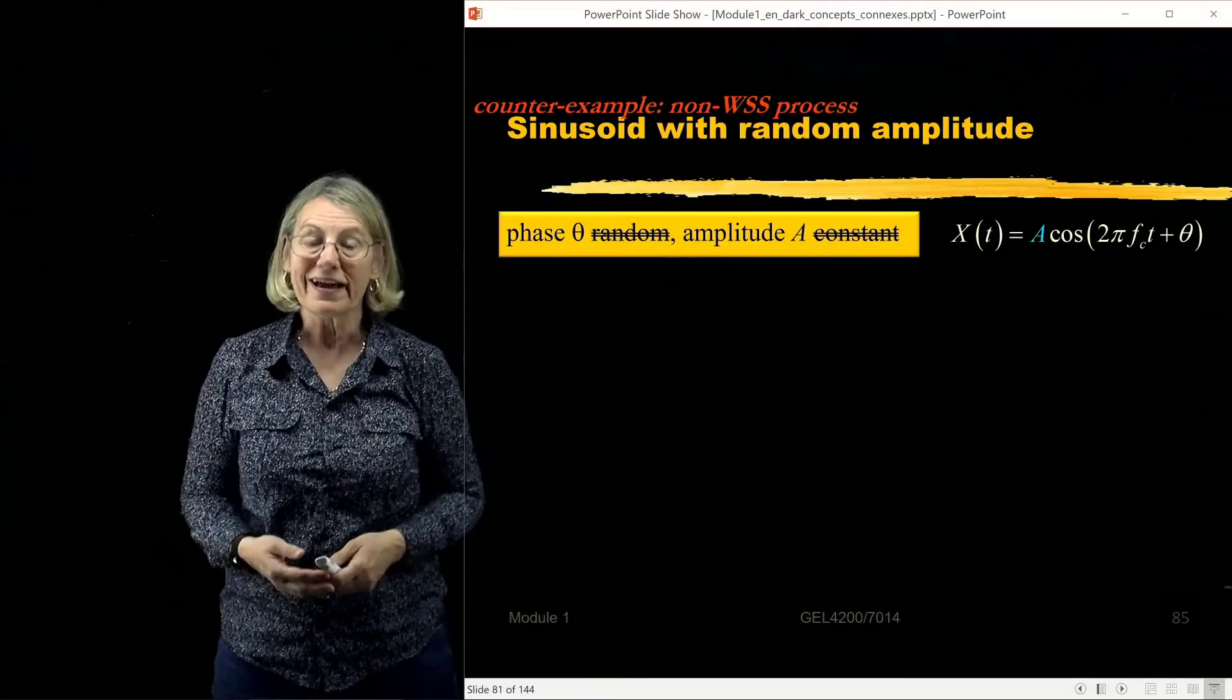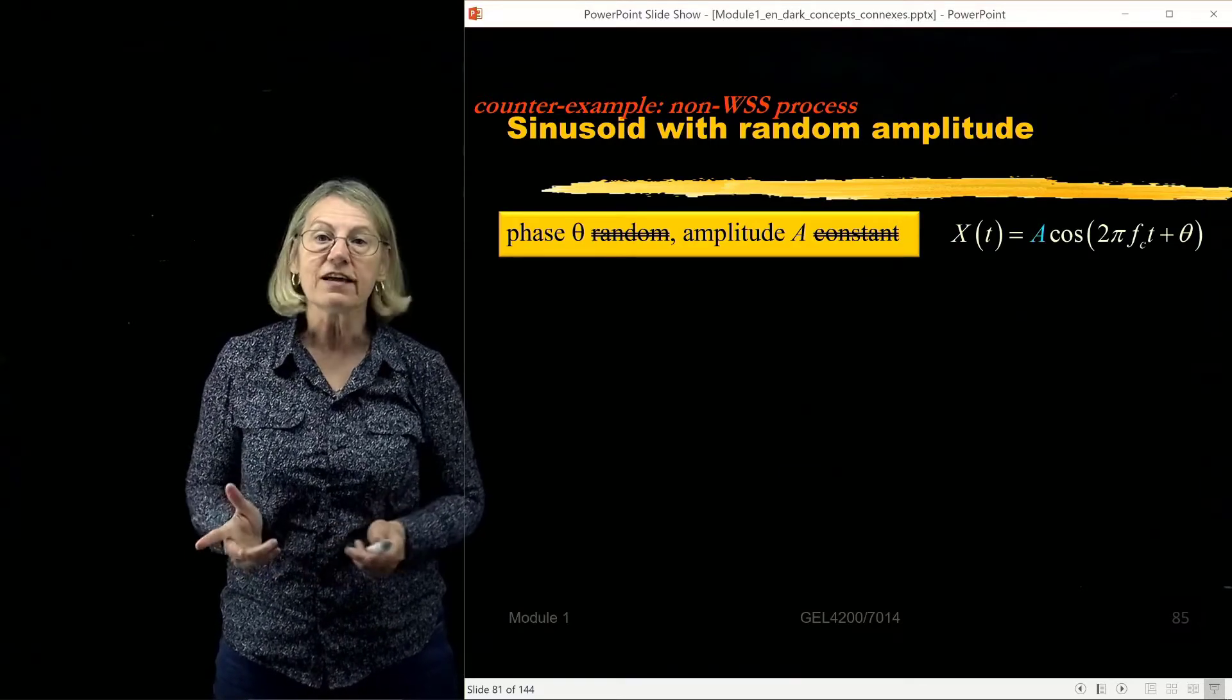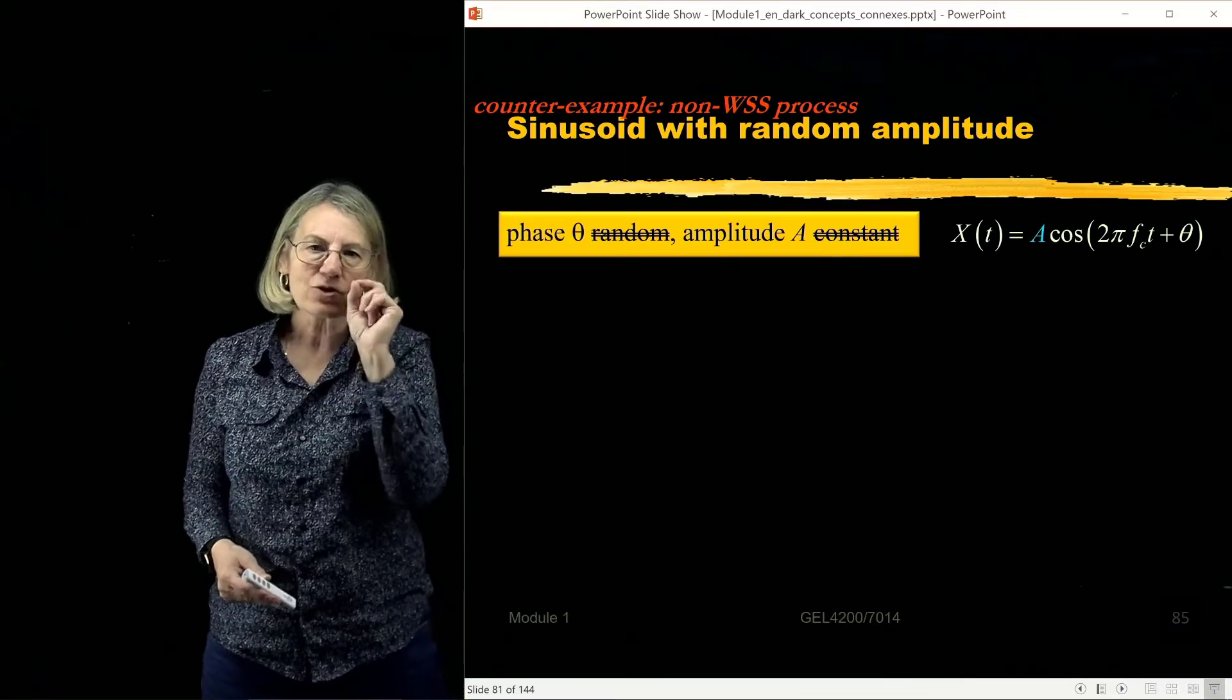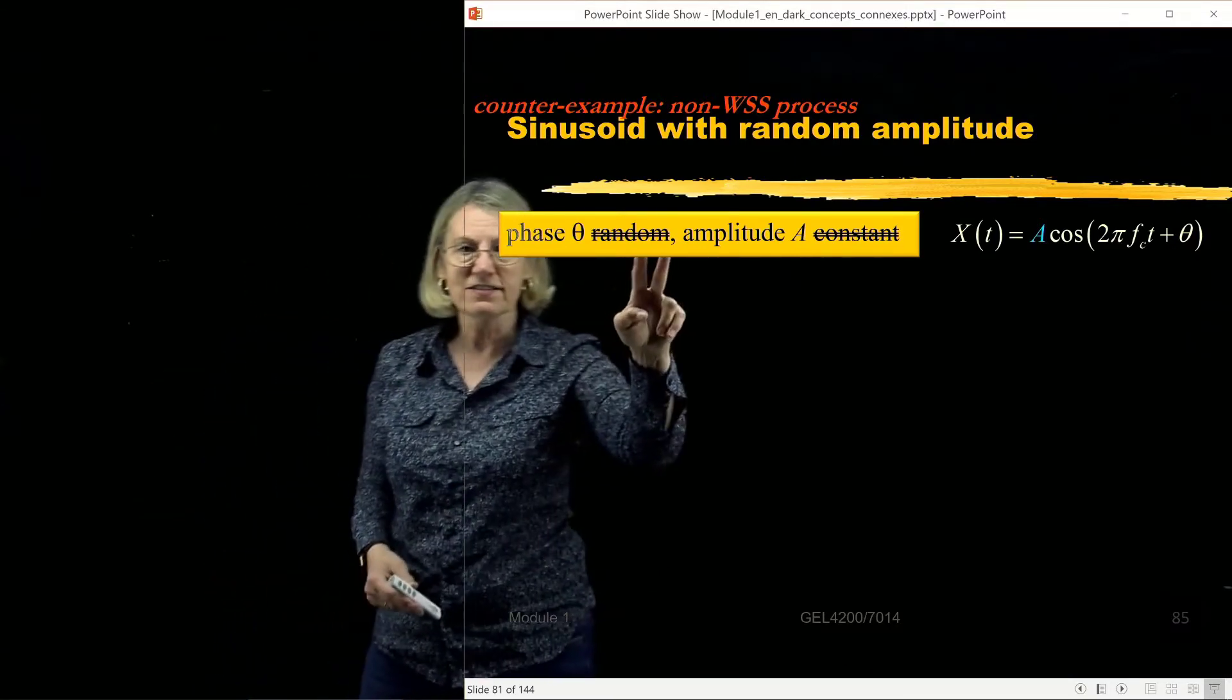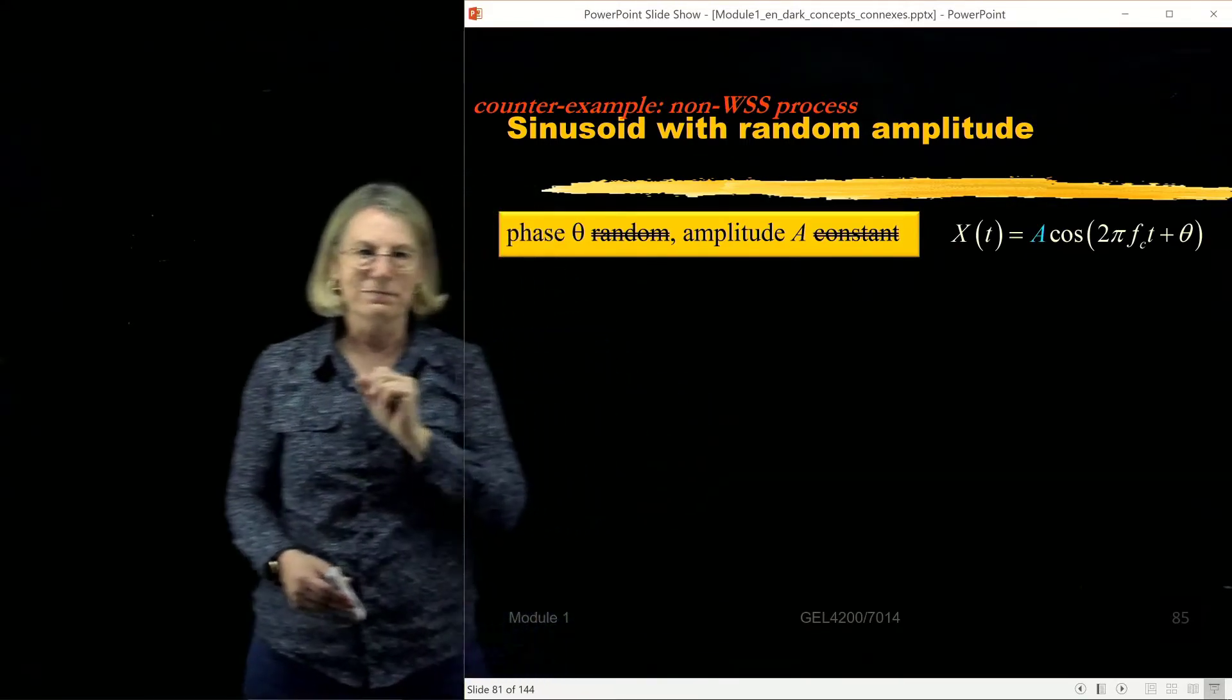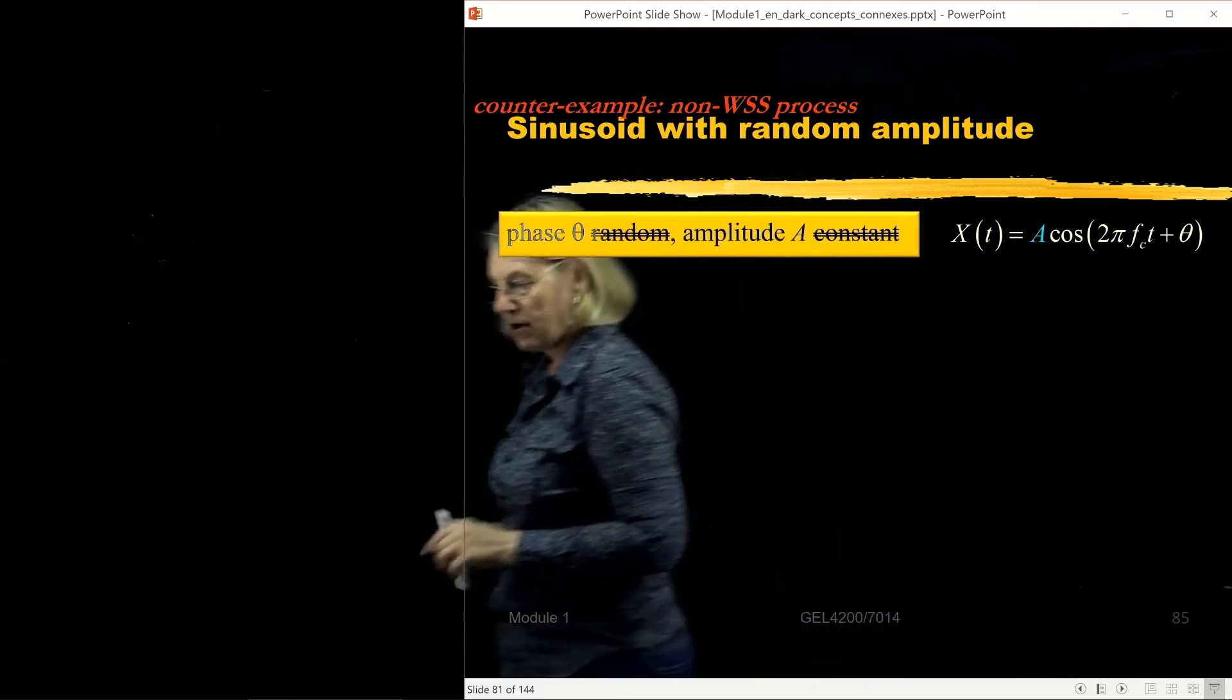Now I'm going to give you a counter example. I'm going to give you an example where it is not a wide sense stationary process. And what's funny is I'm going to start with what looks like exactly the same process. It's still going to be a sinusoid, but the part that's going to be random now is no longer the phase. Instead of the phase, I'm going to make it the amplitude. So now the phase is constant, and the amplitude is random. So I've sort of switched things around. So the theta is a constant, fc is a constant, A is a random process.